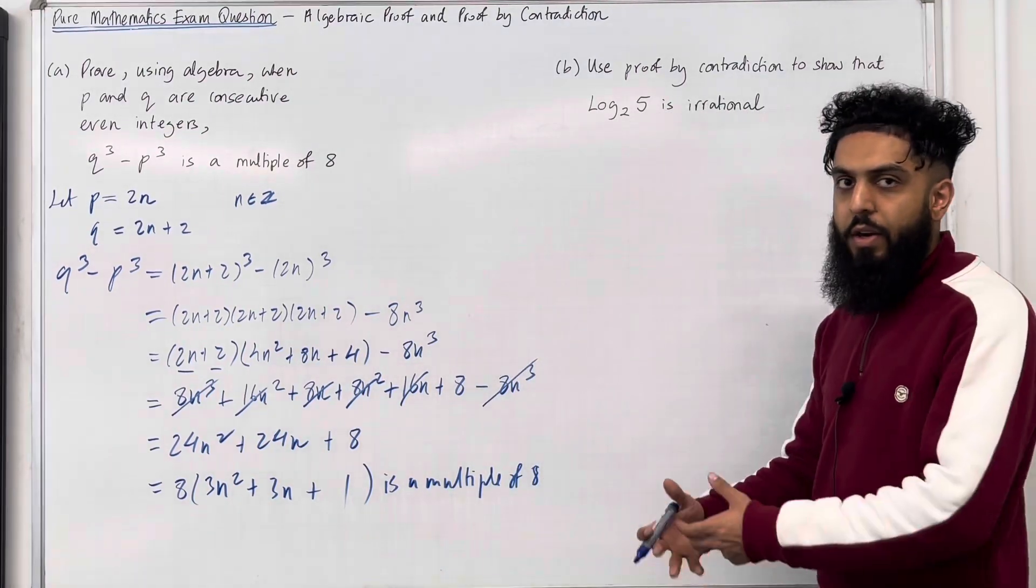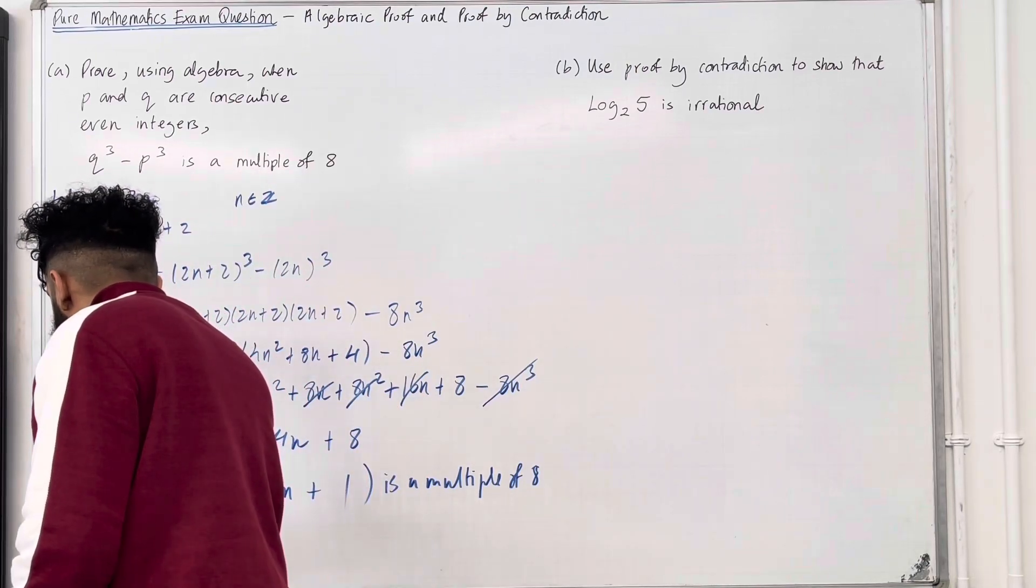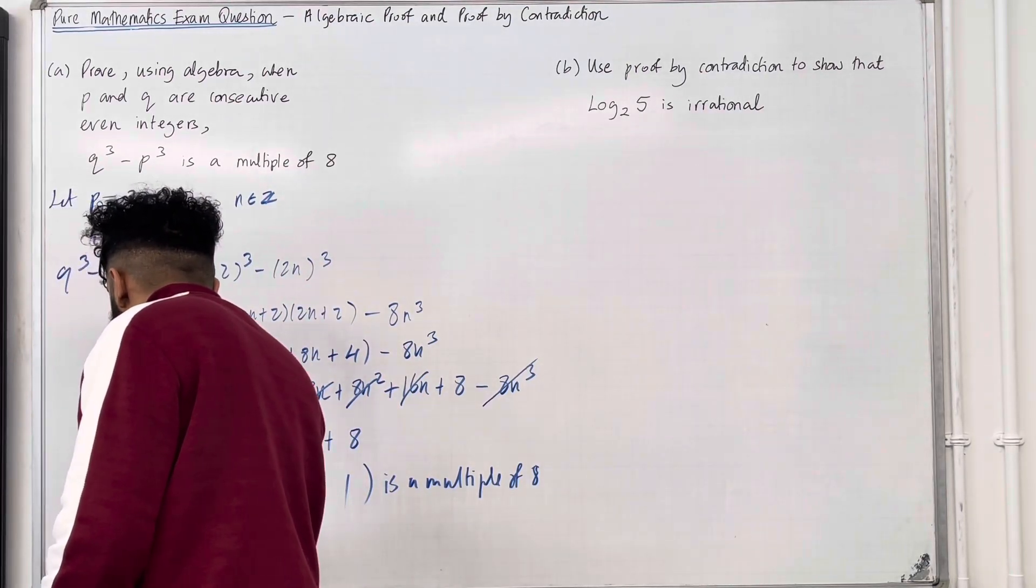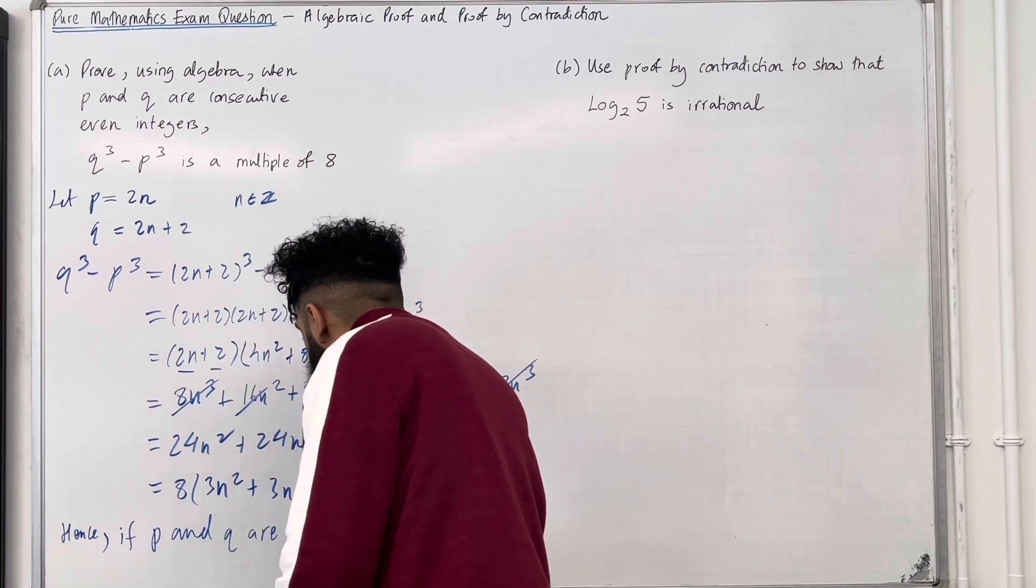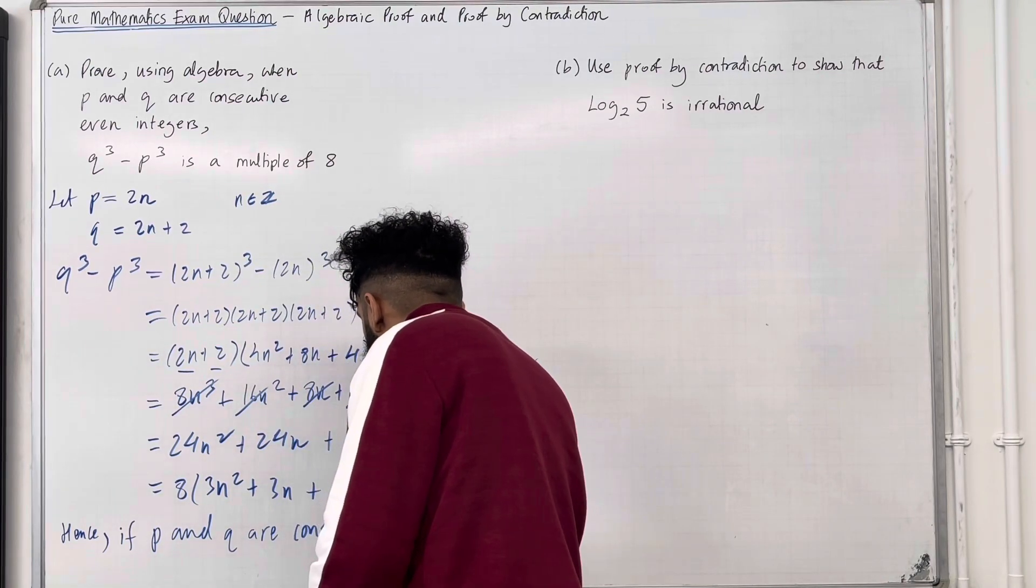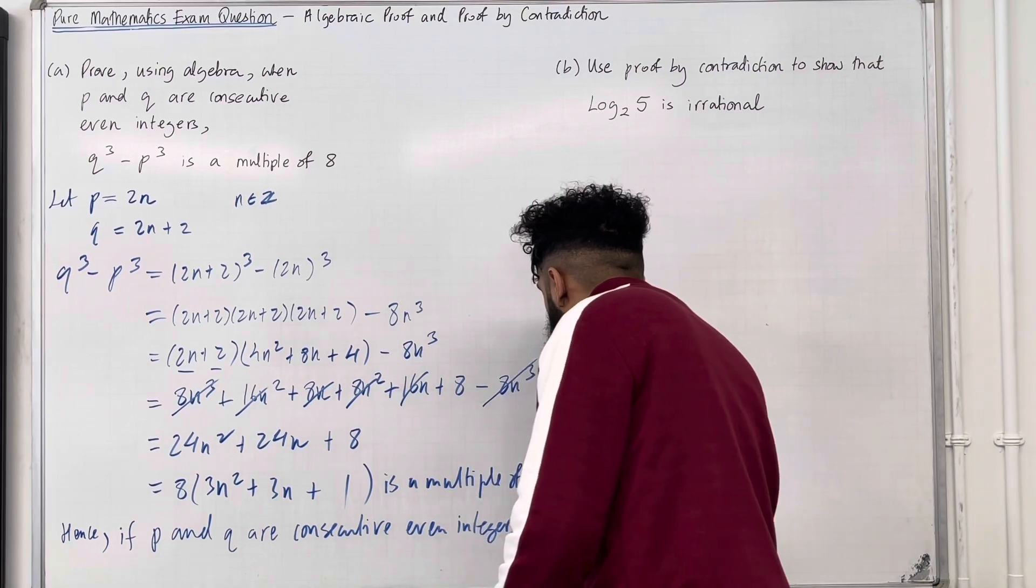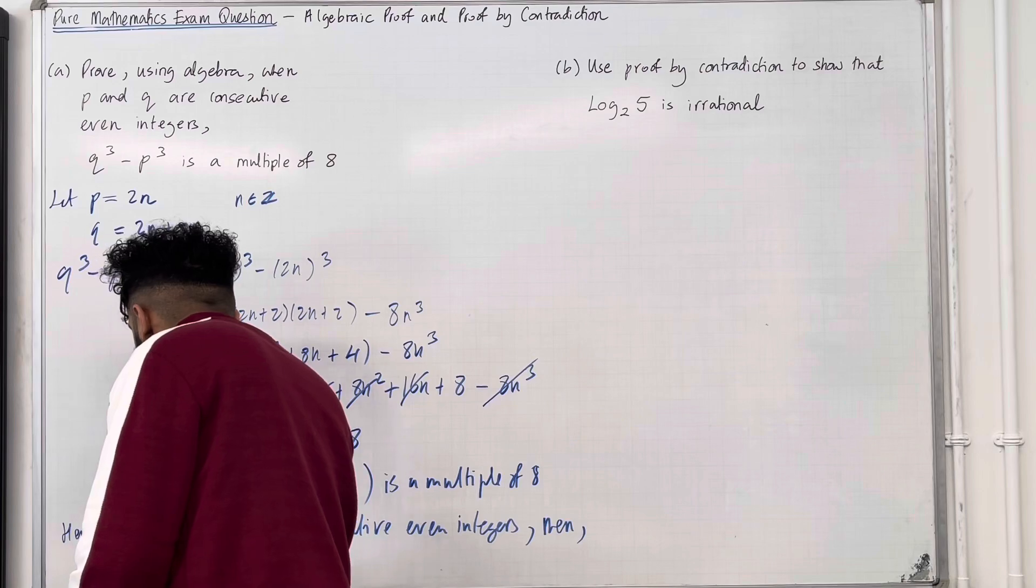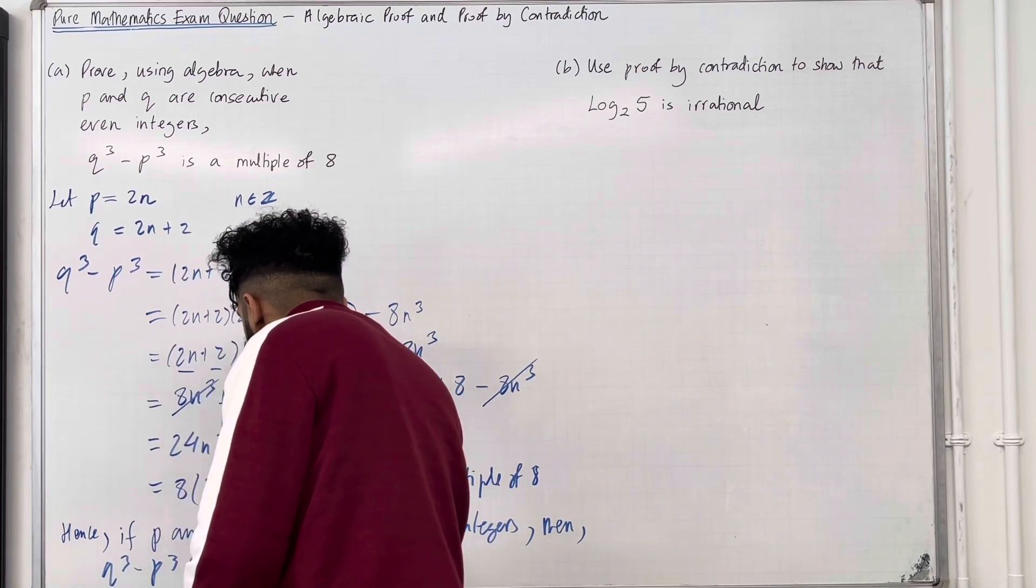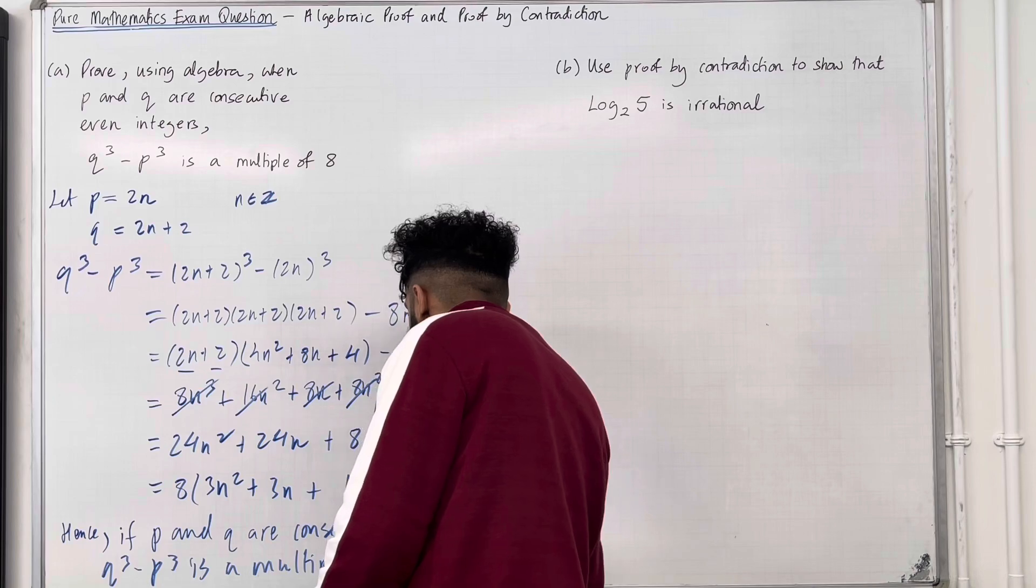Now to get the final mark, I'm going to write a proper conclusion. Hence, if P and Q are consecutive even integers, then Q cubed minus P cubed is a multiple of 8 and of proof.